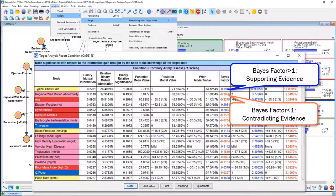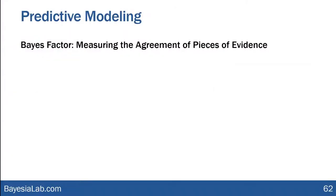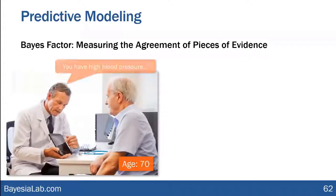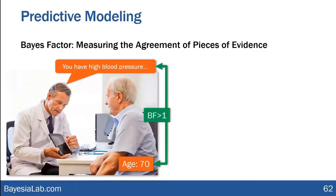So this gives us a sense of how observations support or disagree with existing evidence or a given hypothesis. Here's a more intuitive example: a gentleman at age 70 is told by the doctor he has high blood pressure. Probably at age 70 most people have elevated blood pressure — so the age and blood pressure are consistent, giving a Bayes factor greater than one. However, if a patient is age 19 and told he has high blood pressure, that would be inconsistent given the model.